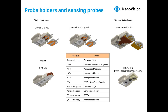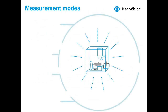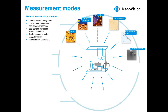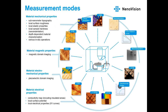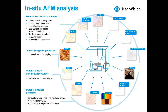We can also customize holders for other probes. LightScope supports a wide range of measuring modes divided into four groups: material mechanical properties, material electrical properties such as KPFM or conductive AFM mapping, material magnetic properties, and material electromechanical properties. Today we'll have a closer look at electrical and magnetic measurements.